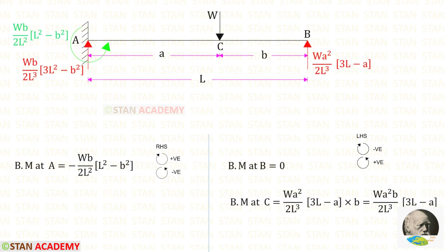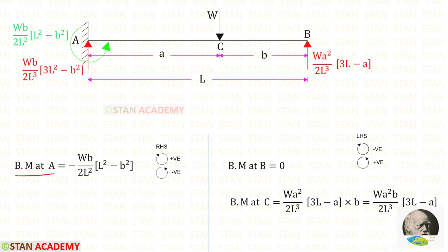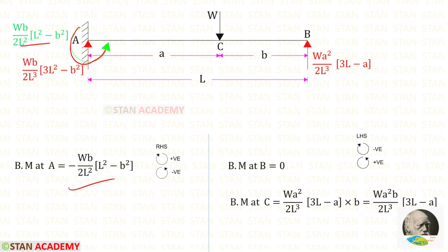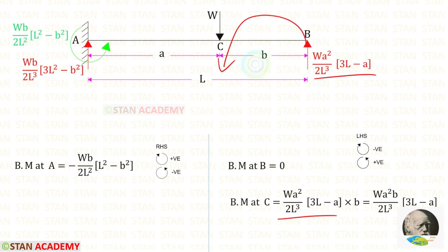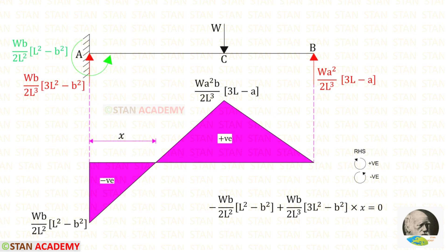Now let us find the bending moment values. Point B is a simply supported end, so the bending moment at B will be zero. To find the bending moment at A, we use the right-hand side rule: clockwise is positive and anticlockwise is negative. MA acts in the anticlockwise direction, so it is negative. To find the moment at point C, we use the left-hand side rule: clockwise is negative and anticlockwise is positive. RB acts in the anticlockwise direction, so it is positive, with distance B. Finally, for the bending moment at C we get that expression. Here you can see the bending moment diagram.